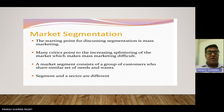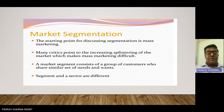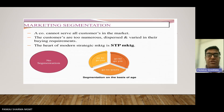We approach the market not in a singular form, but create as many different variations as we can. In every variation, marketing addresses the mass — meaning a big group of customers who share similar needs and wants. A company cannot serve all customers in the market; customers are different in number, dispersed, and varied in their buying requirements. The heart of modern marketing strategies is STP.